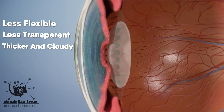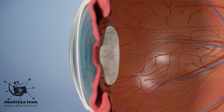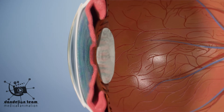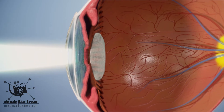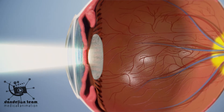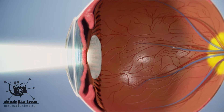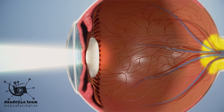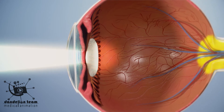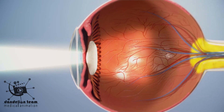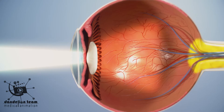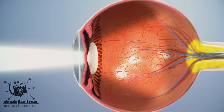As the cataract continues to develop, the clouding becomes denser. A cataract scatters and blocks the light as it passes through the lens, preventing a sharply defined image from reaching your retina. As a result, your vision becomes blurred.